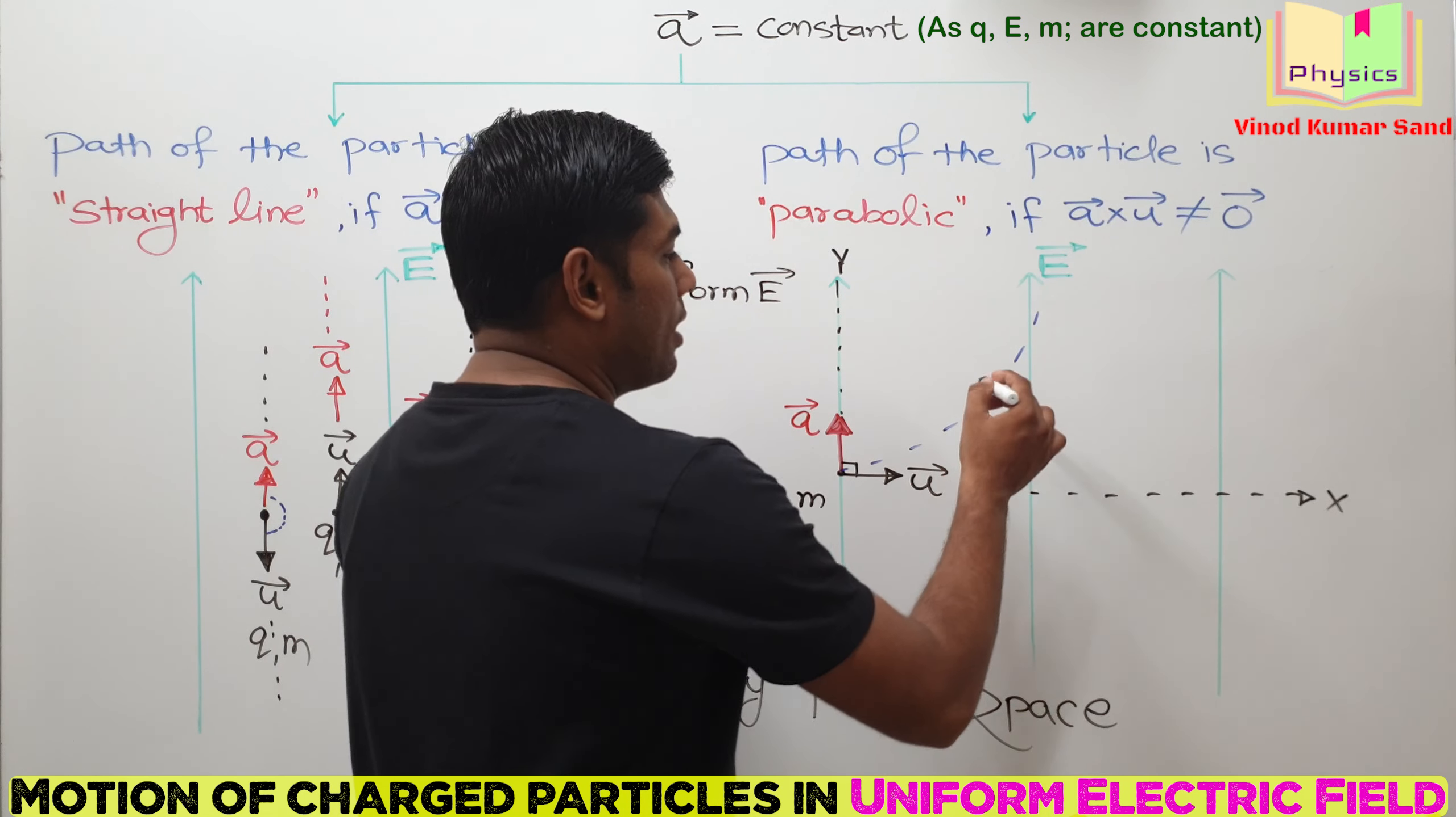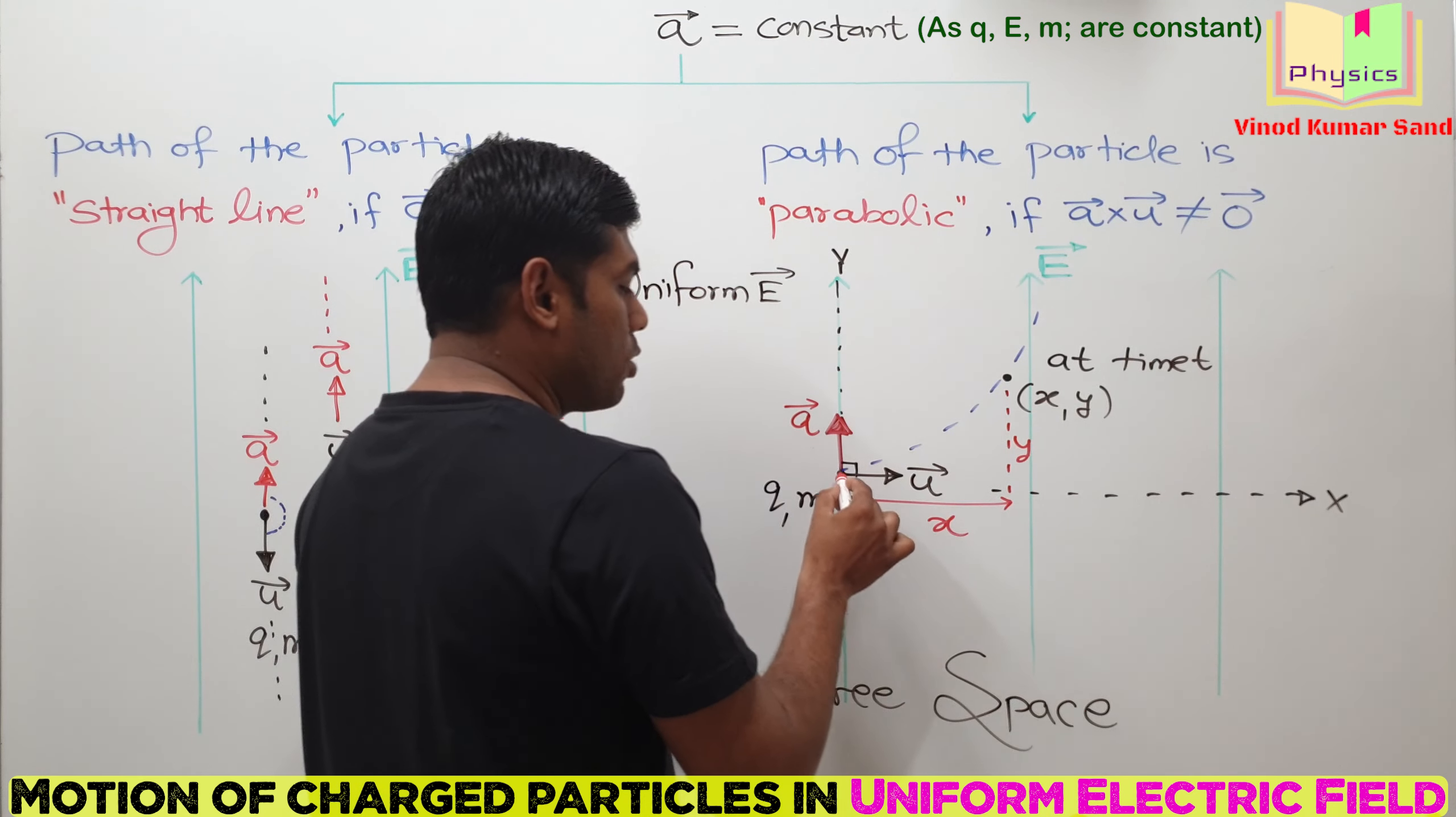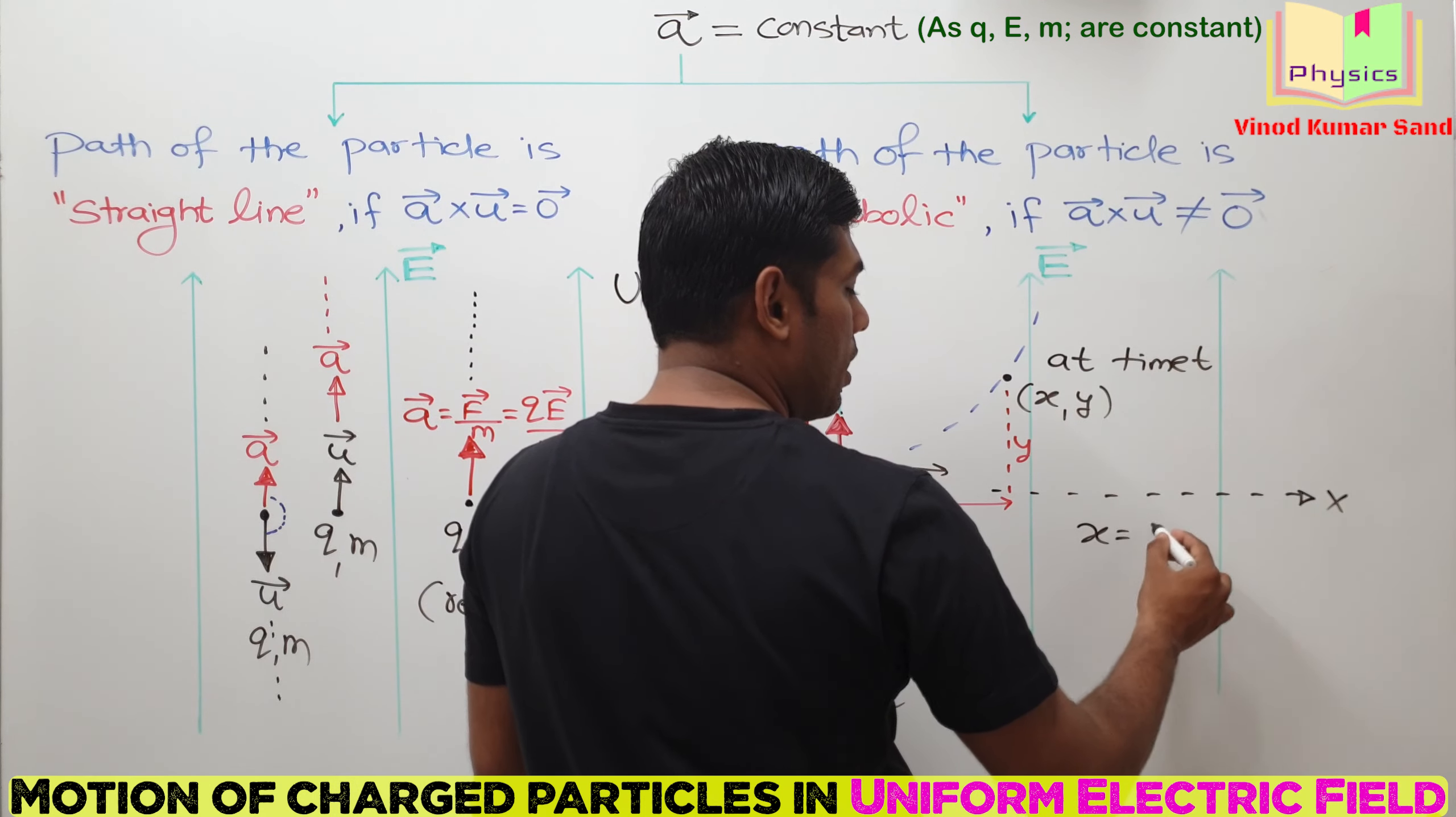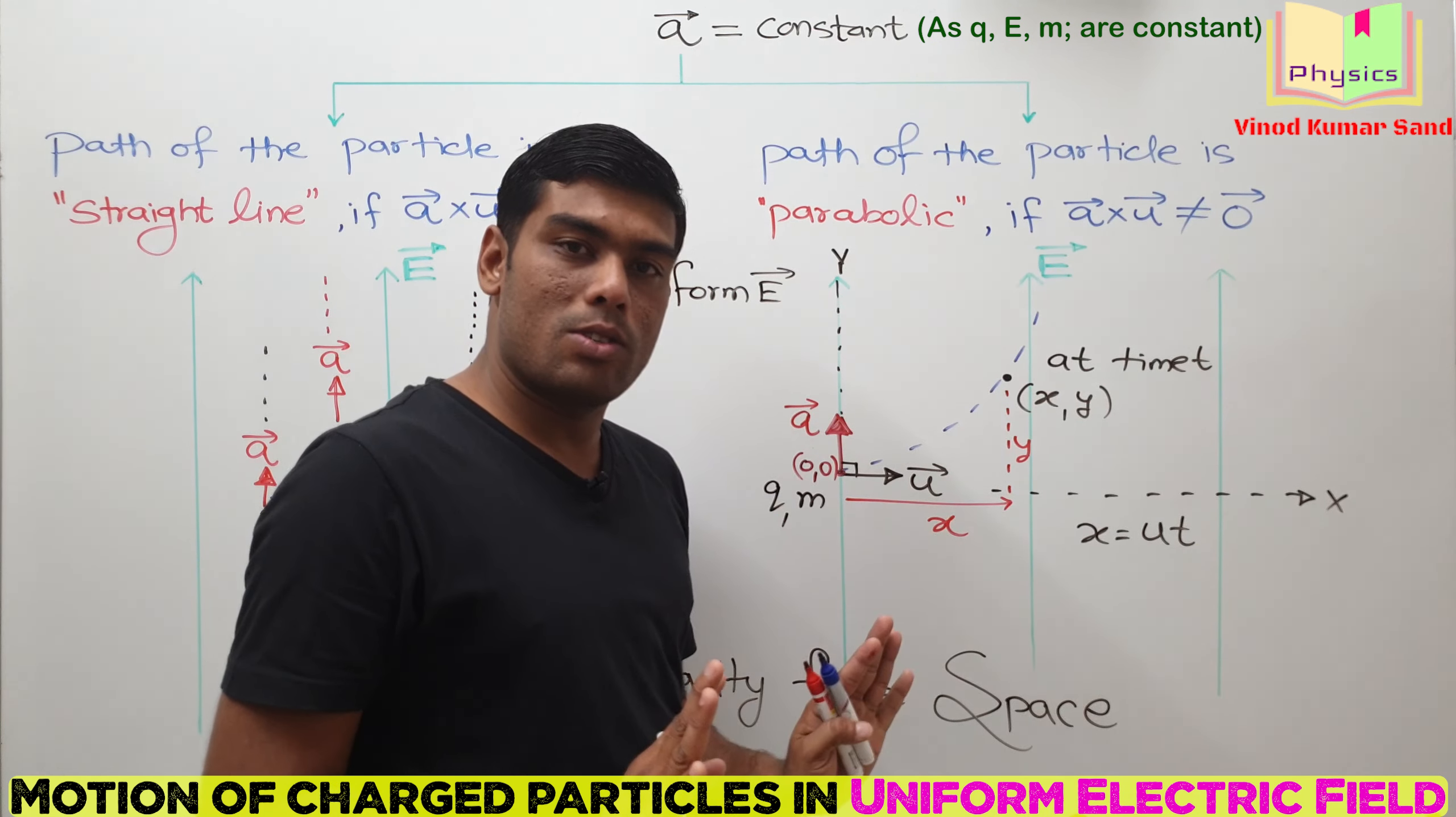Particle will be moving like this on the parabolic path. At some time t, let us write the coordinates of particle. You can take up this height as y and you can take up this as x if you set up the origin here 0, 0. Let us write the data. The x will be equal to ut. In x direction, there is no acceleration. Only force acting on the particle is in the y direction. So in x direction, we can write speed into time equals the distance traveled.